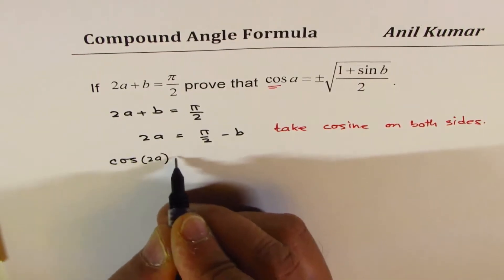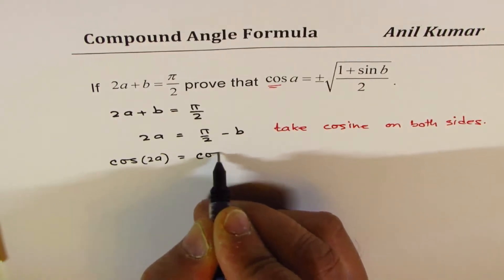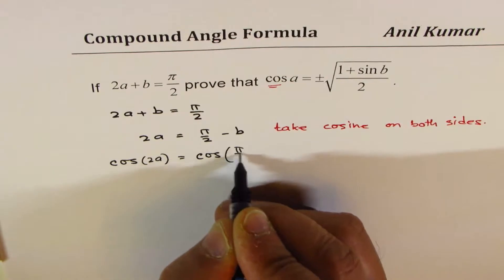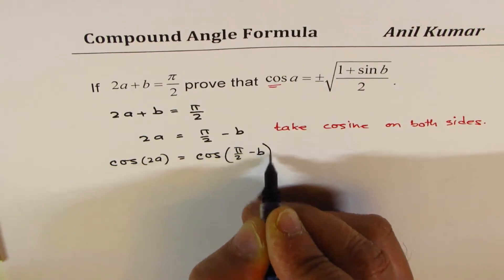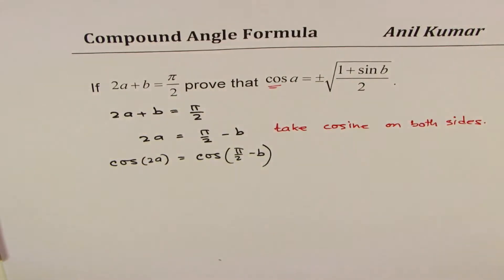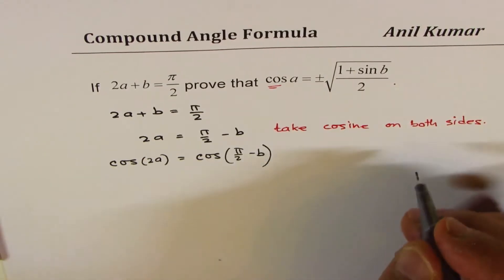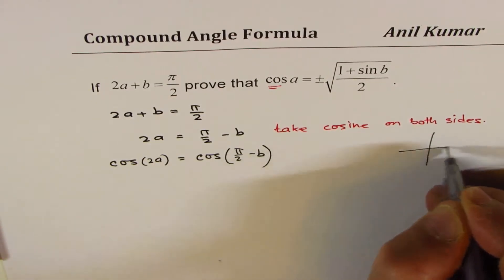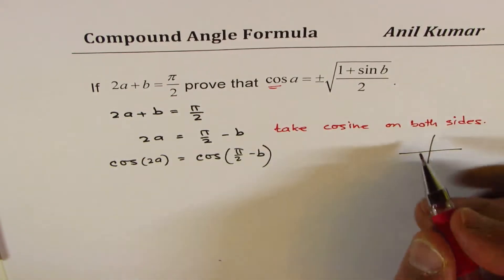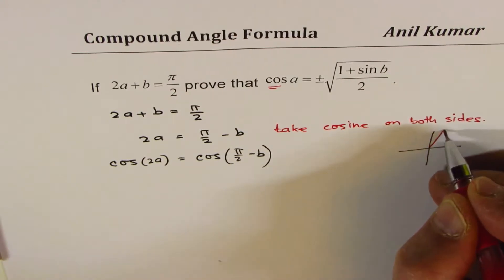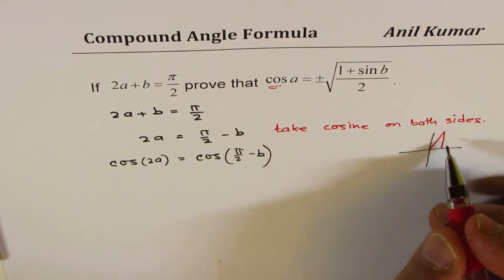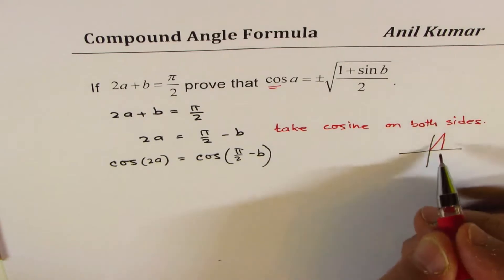Now what is this cos of pi by 2 minus b? So pi by 2 minus b means you are in this position, and that is pi by 2 minus b, that is this angle.